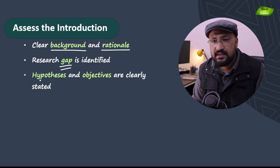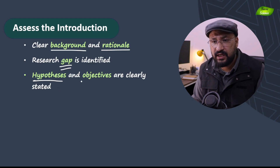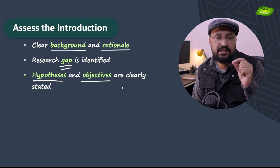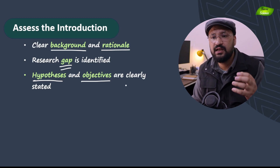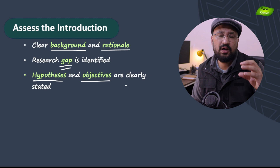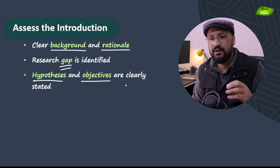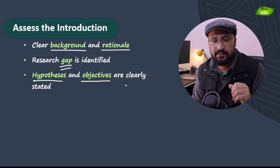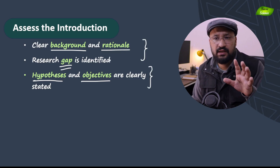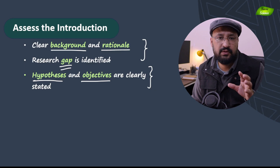Next is hypothesis. Most of the time in the introduction, a hypothesis will be provided and objectives will be mentioned — they should be clearly stated. By reading the introduction we should get an idea of the objectives and the hypothesis that the researcher is trying to formulate and get the answer to. This is how a reviewer should review the introduction.